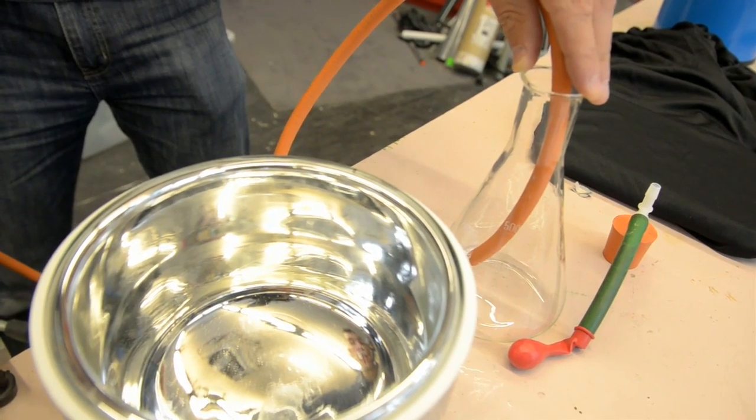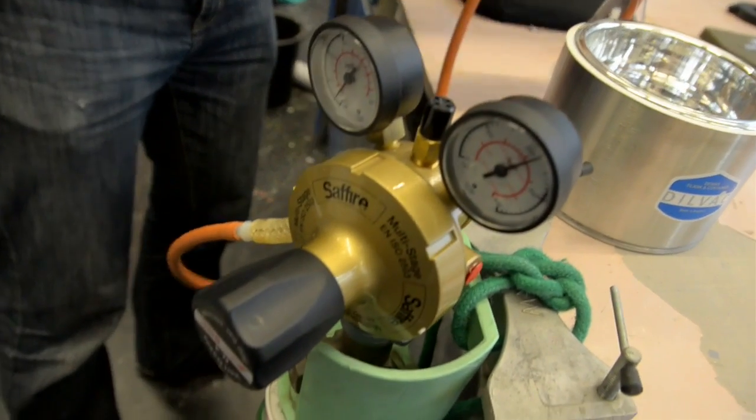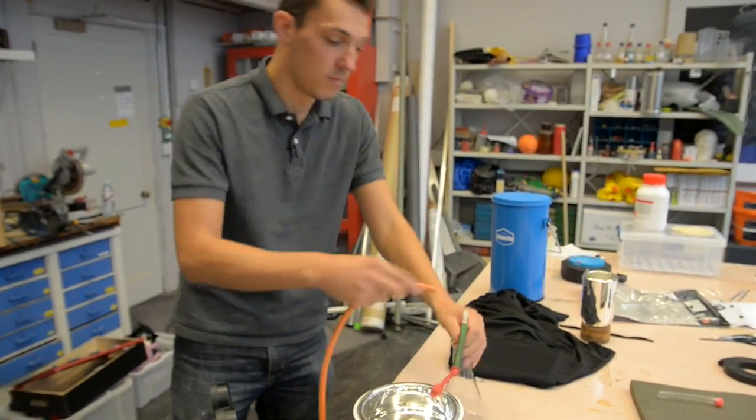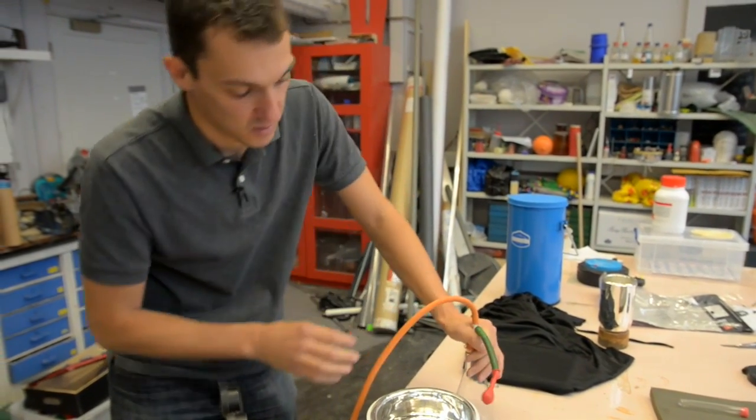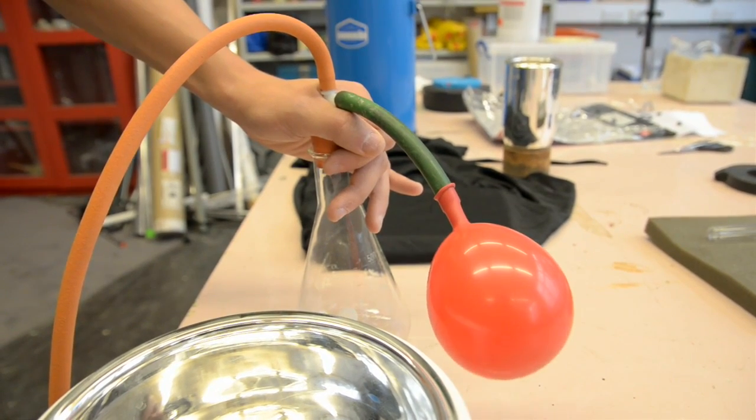It's a little bit denser than air, so it'll just sit in here. I think the molar mass is about 40 compared with air at about 29-ish, so it's about a third more dense or something like that. This flask is basically pretty full of argon. Just inflate the balloon a little.